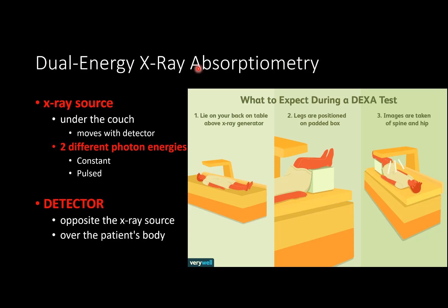Dual energy X-ray absorptiometry (DEXA) uses X-ray as the energy source, with the X-ray source kept below the patient and a detector above. Two different photon energies are used to differentiate bone from soft tissue. X-rays from bone are isolated and the amount of calcification is evaluated.